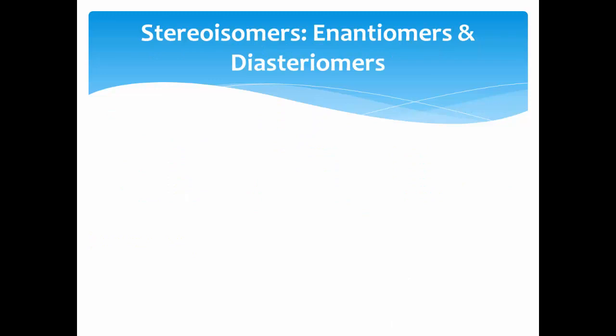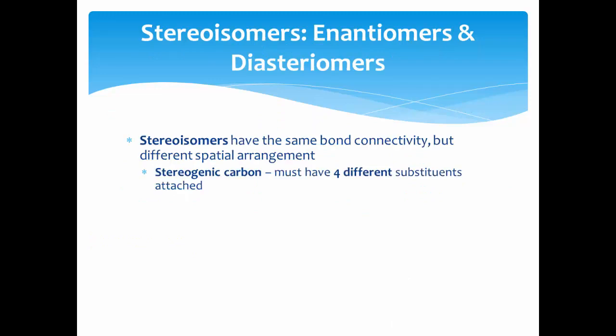Another type of isomer is a stereoisomer. Stereoisomers have the same bond connectivity but different spatial arrangements. These are only possible if you have a stereogenic carbon, which is a carbon that must have four different substituents attached.